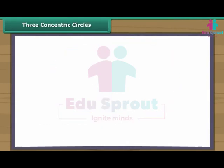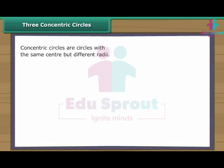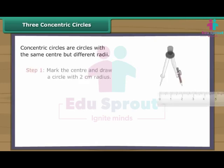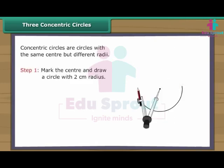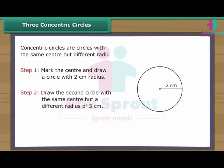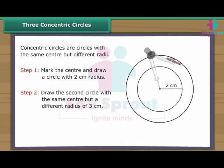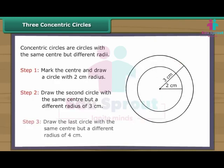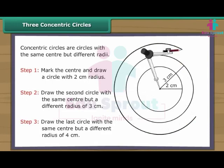Three concentric circles. Concentric circles are circles with the same centre but different radii. Let us now draw three concentric circles with the radii two, three and four. Mark the centre and draw a circle with two centimetres radius. Draw the second circle with the same centre but a different radius of three centimetres. Draw the last circle again with the same centre but a different radius of four centimetres. We have three concentric circles.